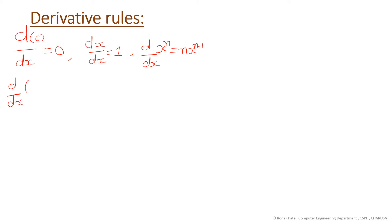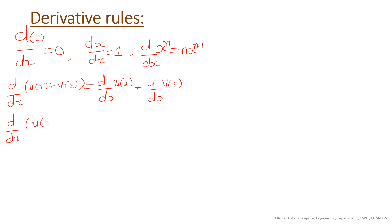Next, the derivative of two functions u(x) and v(x). For the sum rule, the derivative of u(x) plus v(x) is the sum of their individual derivatives. For the multiplication rule, the derivative is: first function as-is times the derivative of the second function, plus the second function as-is times the derivative of the first function.